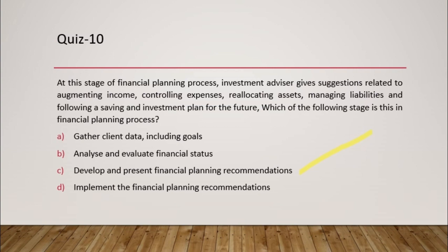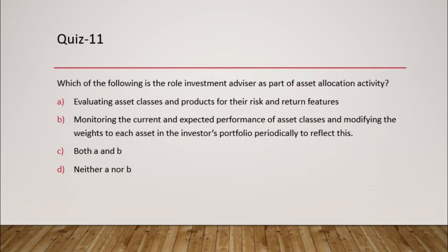Question 11: Which of the following is the role of an investment advisor as part of asset allocation activity? Two statements are given: first, evaluating asset classes and products for their risk and return features; second, monitoring current and expected performance of asset classes and modifying weights in the investor's portfolio periodically. Both of these activities are performed as part of asset allocation by an investment advisor. The answer is both A and B.